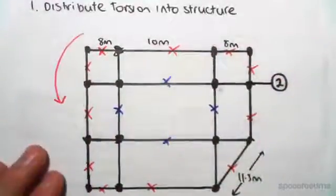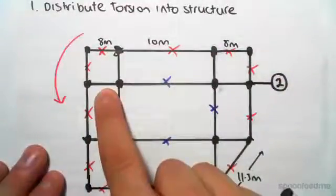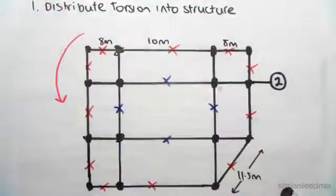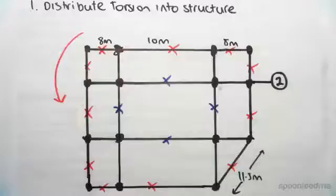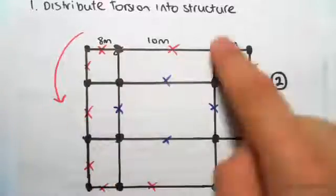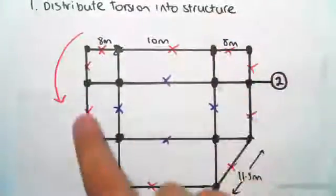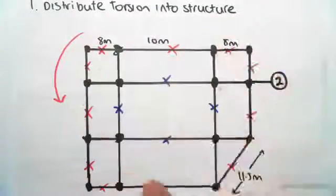This beam there, for example, is not going to do anything. It's only these outer beams which are actually going to resist the twisting. Think of it as sort of following the circle, the torsion. They have the outer ones there and the inner ones there.